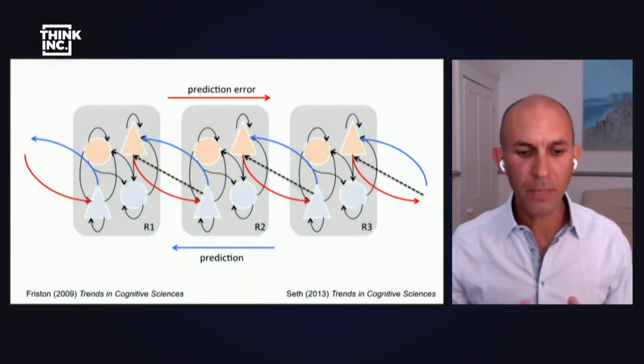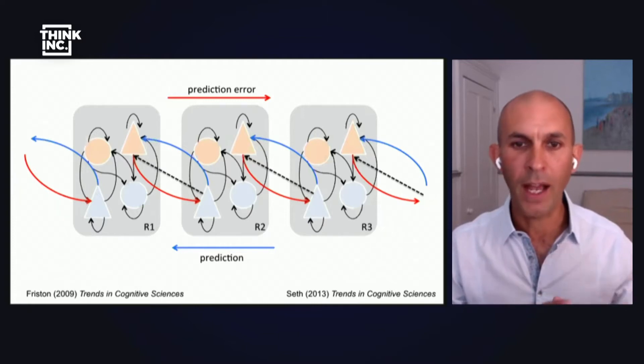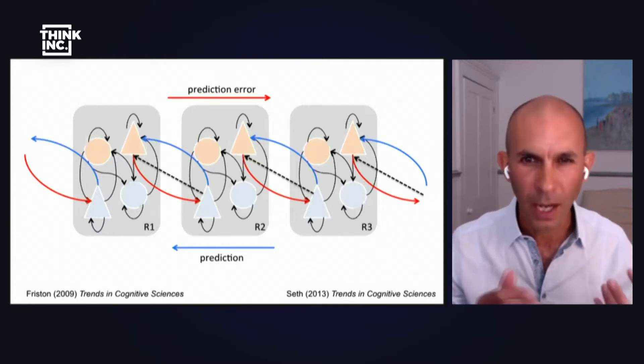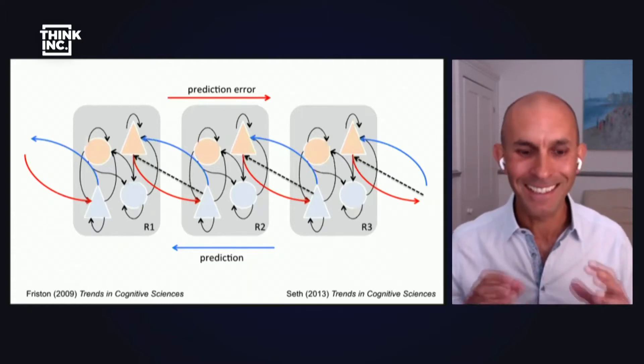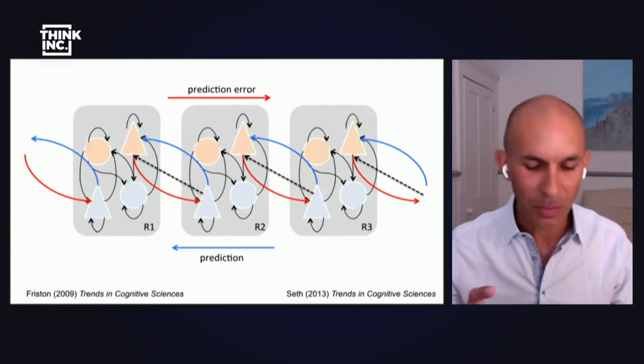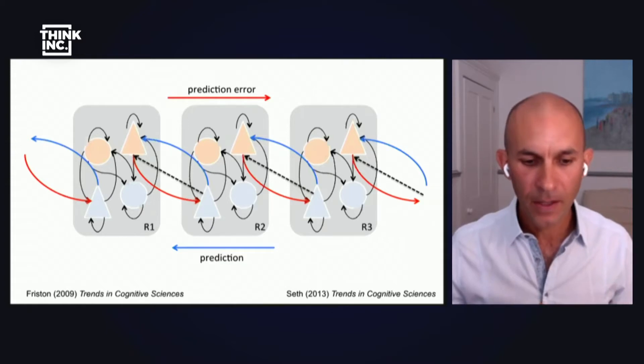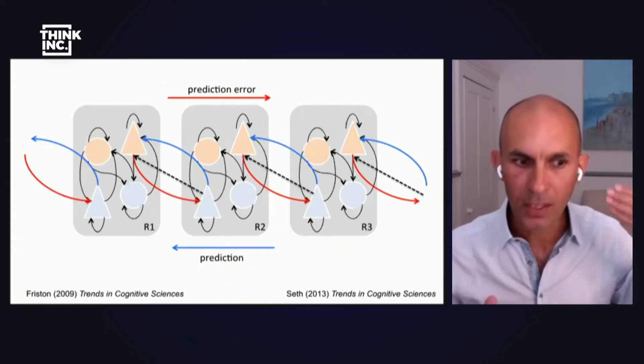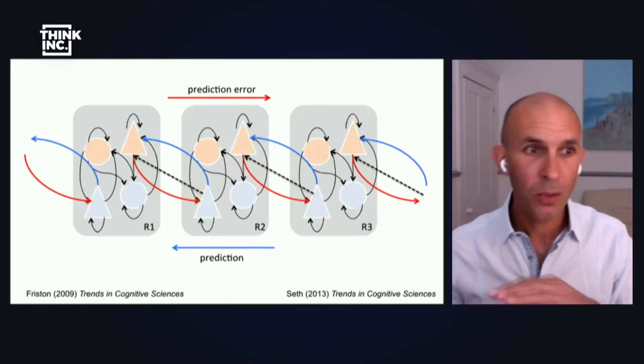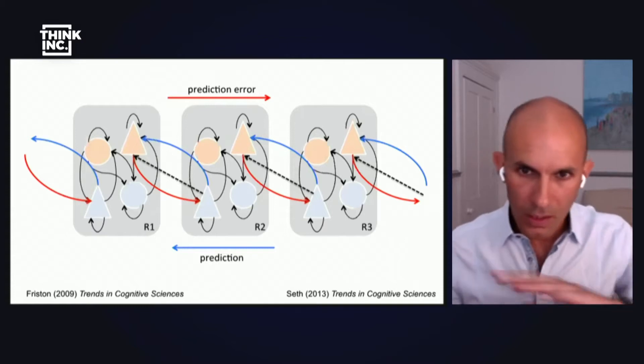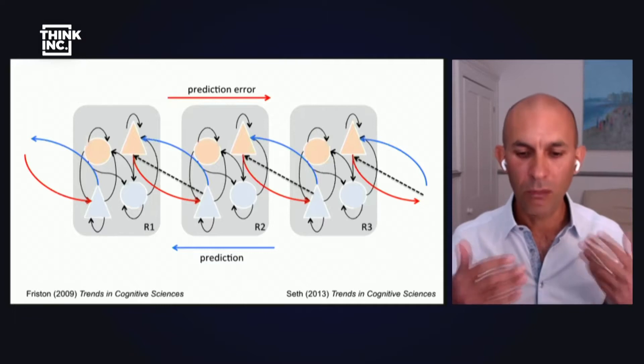Let me flesh out this picture to give you a sense of how predictive perception actually plays out in the circuits of the brain, or at least how we think it might play out. Here's a pretty complicated diagram. I'm not going to go into the details, just give you the big picture. The three big grey boxes we can imagine as three cortical regions, let's say three stages of processing in the visual cortex. The basic idea here is that the blue arrows, which are going in this inside-out, top-down direction, these carry the predictions about sensory signals, while the red arrows...